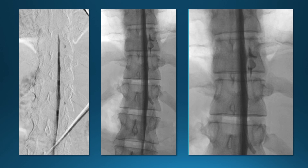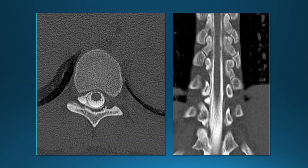On digital subtraction myelogram, early images show some accumulation of contrast in the region of one of the root sleeves, and a later image shows more accumulation — myelographic contrast accumulating outside of the thecal sac, indicating the site of leak along the root sleeve. On CT myelogram, this is the dura, and this is the contrast accumulating outside the dura at the site of the CSF leak, shown here on coronal images.